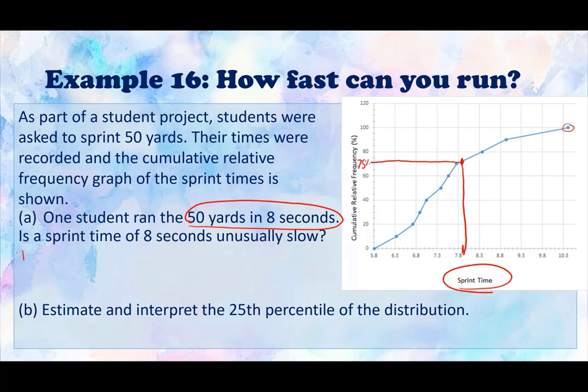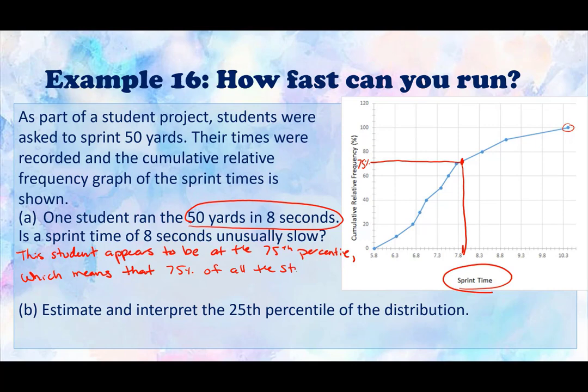Well, it says that this student appears to be at the 75th percentile, which means that 75% of all the students had faster times than him. And this makes 8 seconds relatively slow.